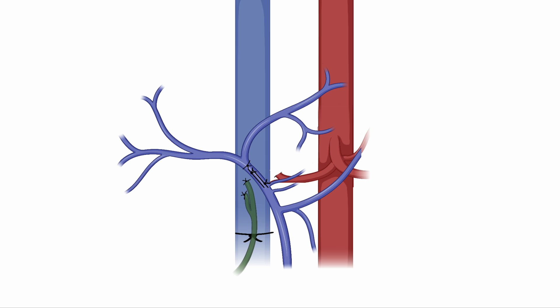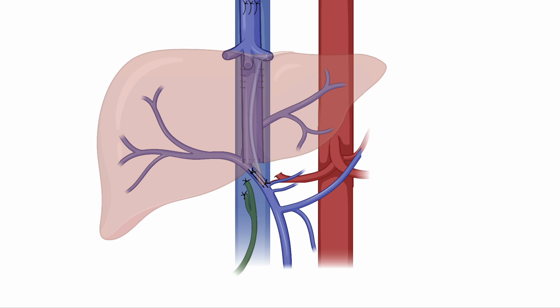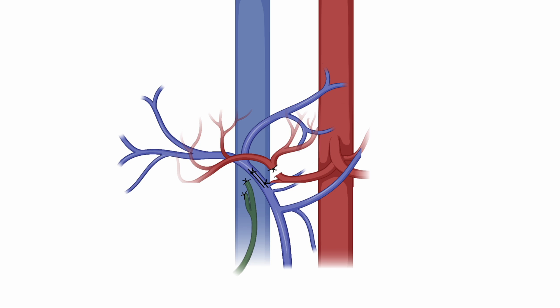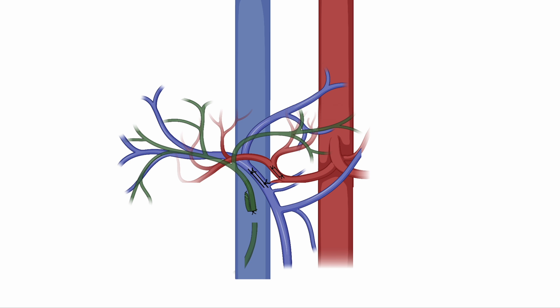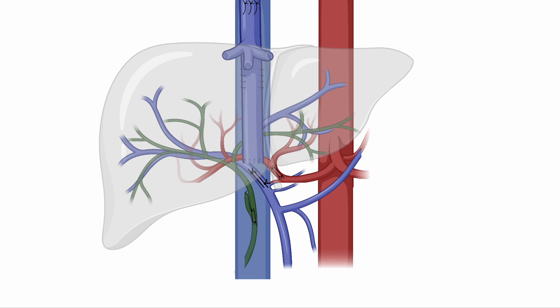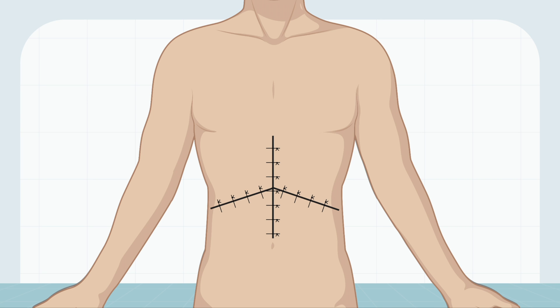Clamps are then removed from the retrohepatic cava and the portal vein, and the liver is revascularized. The arterial blood supply to the liver is reconstructed as a parachute technique is performed for the anastomosis of the donor hepatic artery to the recipient hepatic artery, and the clamps are removed. Lastly, a cholecystectomy — removal of the gallbladder — is performed as the cystic duct is tied and divided. Bile flow is restored as the donor common bile duct is anastomosed to the recipient bile duct using a parachute technique and clamps are removed. You have now completed the transplant and the surgical field is closed as you suture together the different layers of the abdominal wall that you initially cut.